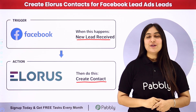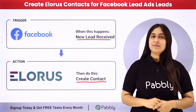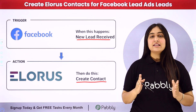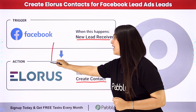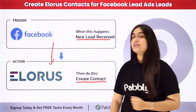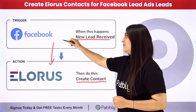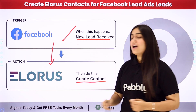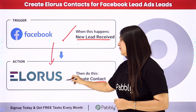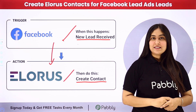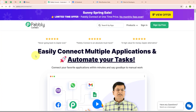To automate this process we will use an automation software named Pabbly Connect, in which we need to connect our trigger and our action. Our trigger application will be Facebook Lead Ads and our action application will be LORIS. To learn this process step by step, let me take you to my screen.